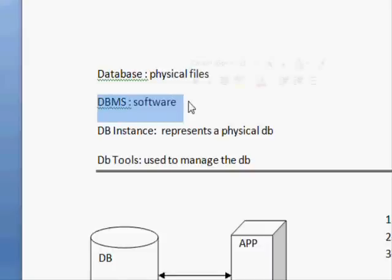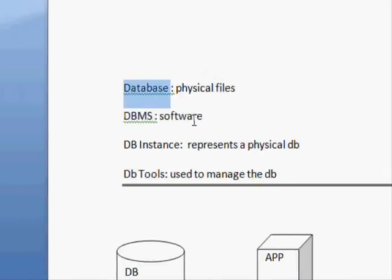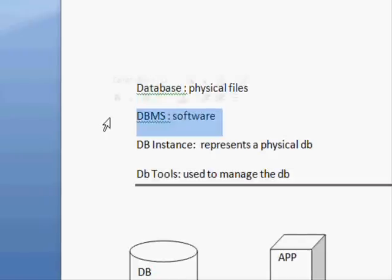The second thing is the database management system. The DBMS is the piece of software that knows how to access the database, because not any program can access the database files directly — they have special formats. Each database has its own DBMS, which is why you have Oracle, SQL Server, Access, Postgres, and so on.